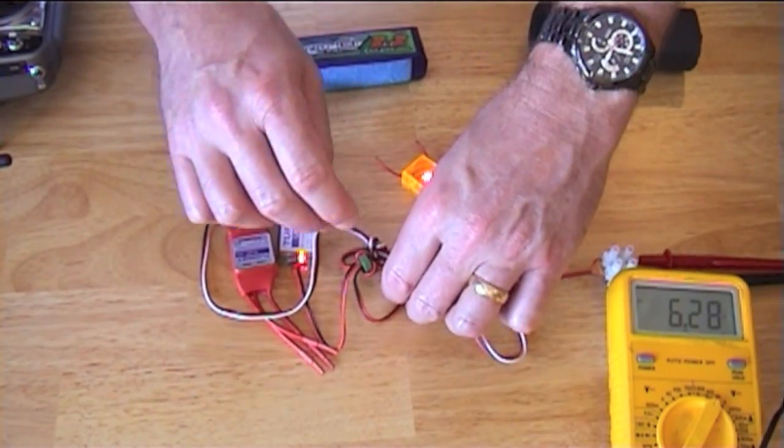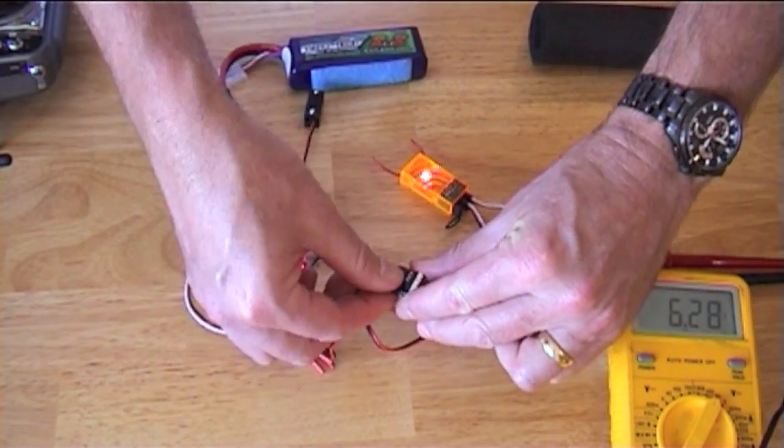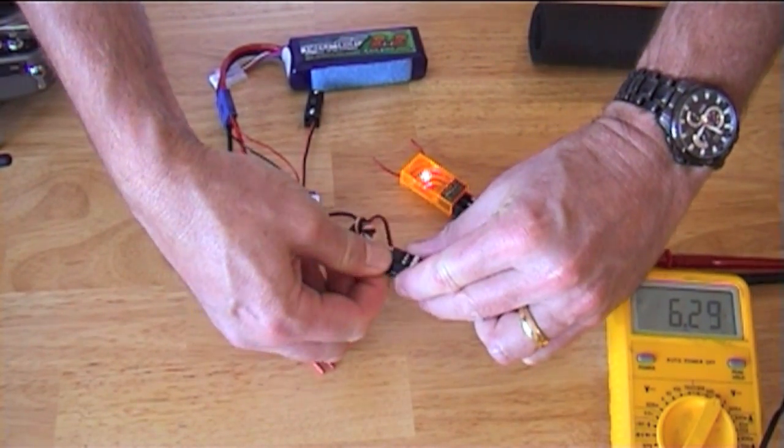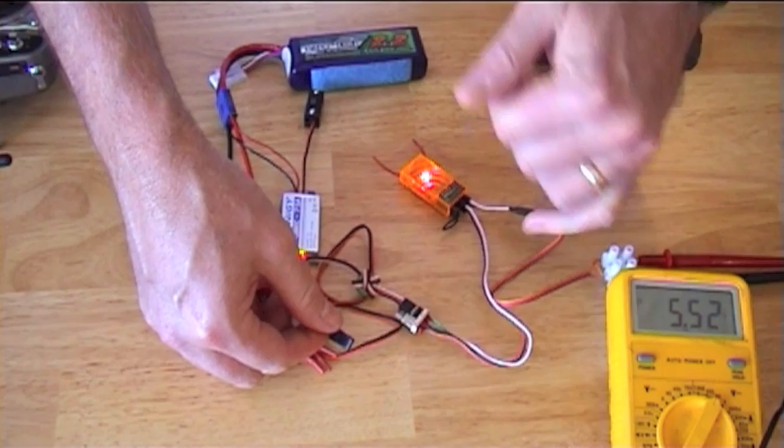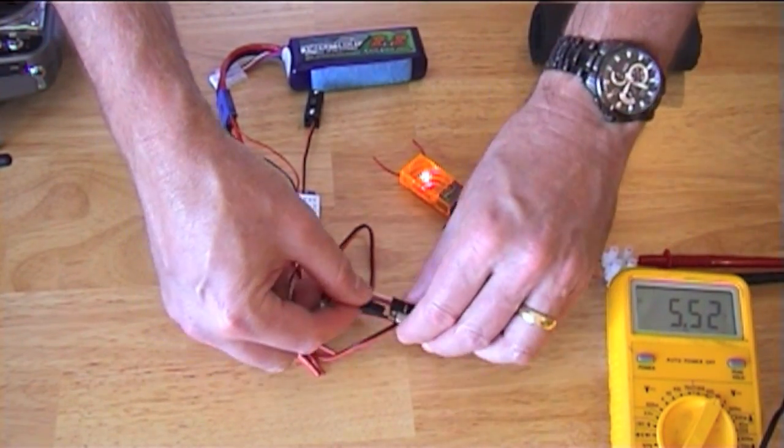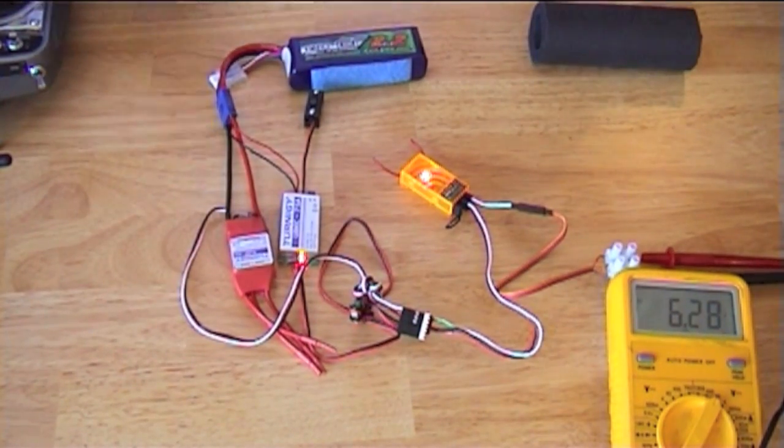You can do another check here if you're not confident in the switch. You can see that, I'll just pull that UBEC out. The light remains steady, the voltage decreased. Let's try another receiver.